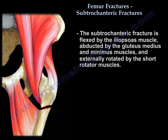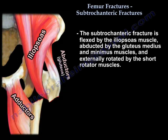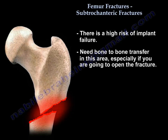The proximal fragment is flexed by the iliopsoas, abducted by the gluteus, and externally rotated by the short rotators. There is a high risk of implant failure, and you need bone-to-bone contact in this area, especially if you are going to open the fracture.